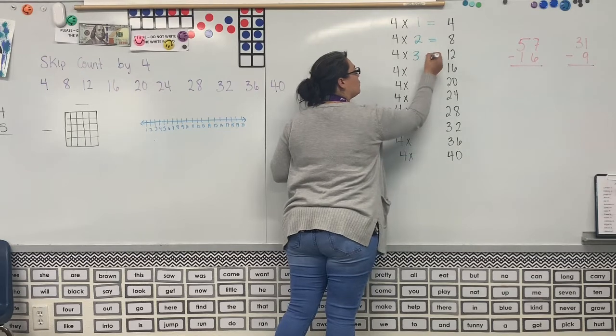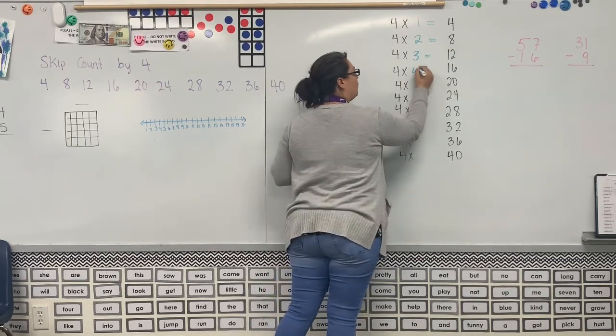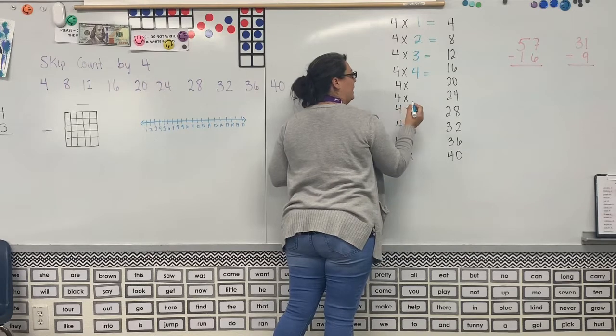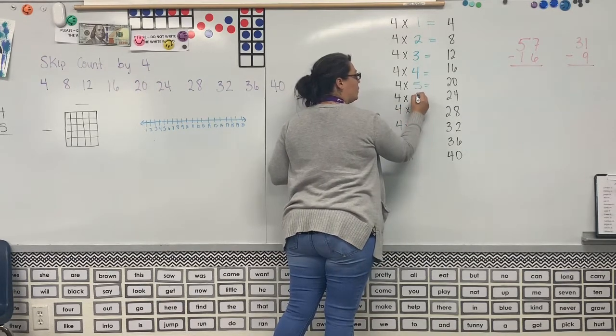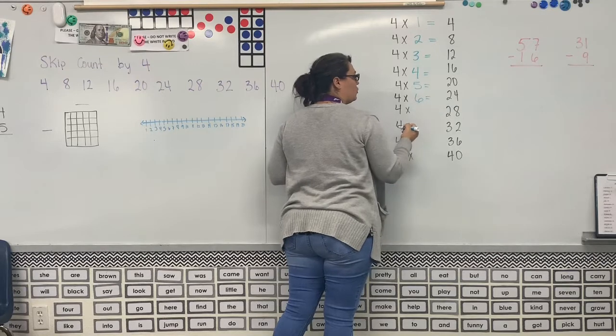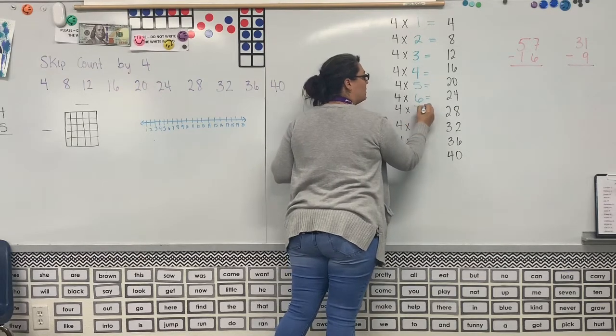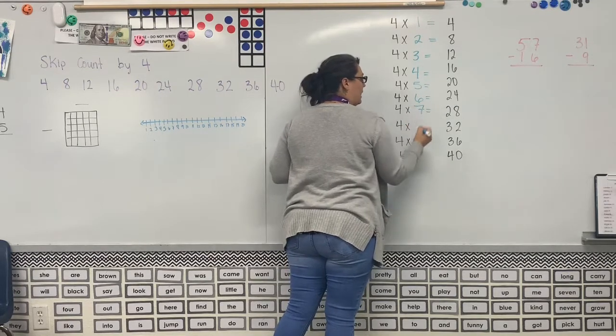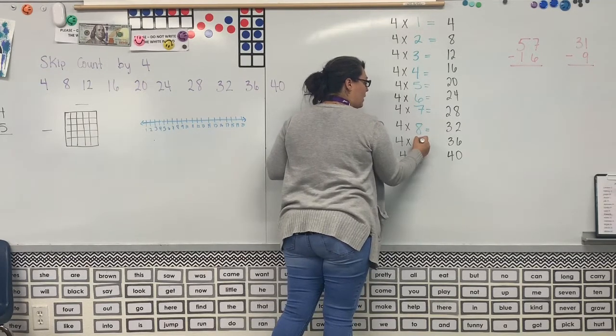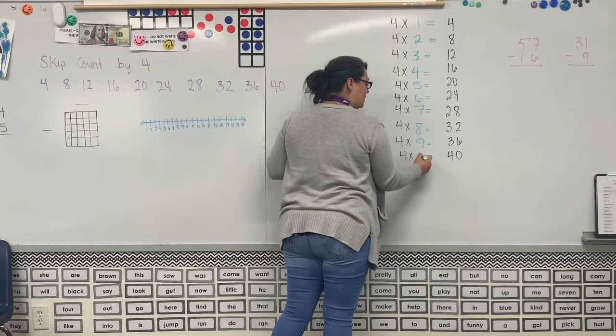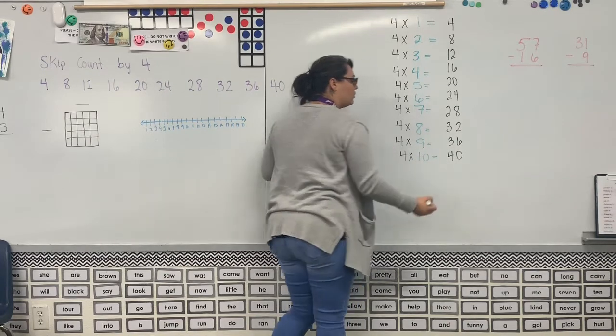4 × 3 is 12, 4 × 4 is 16, 4 × 5 equals 20, 4 × 6 equals 24, 4 × 7 is 28, 4 × 8 is 32, 4 × 9 is 36, and 4 × 10 equals 40.